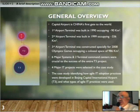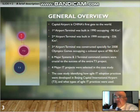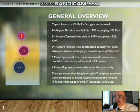Let's have a general overview. The Capital Airport in China is considered the first gate to the world. The first airport terminal was built in 1990 occupying more than 90 square kilometers. The second airport terminal was built in 1999 occupying more than 336 square kilometers. Our case study is focusing on the third airport terminal, which was constructed specially for the 2008 Olympic Games, occupying a floor space of 986 square kilometers.